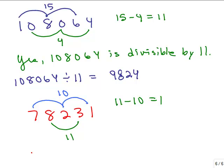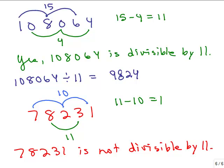78231 is not divisible by 11. So if you try putting it in a calculator, you'll see you're going to get a remainder. So that's one way of finding out that this number is divisible by 11.